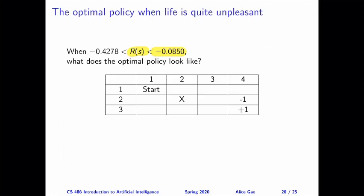Here's the answer. There are two possible paths to the plus one state. One is going above the X, and the other one is going below the X. And these two paths have the exact same length. But the bottom path is safer, because if we go along the bottom path, there's less of a chance of accidentally getting into the minus one state.